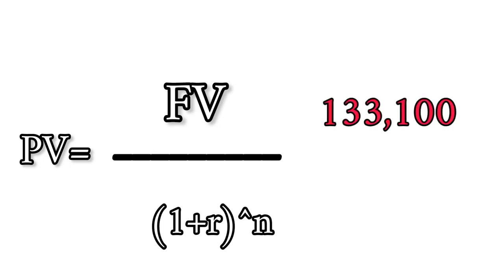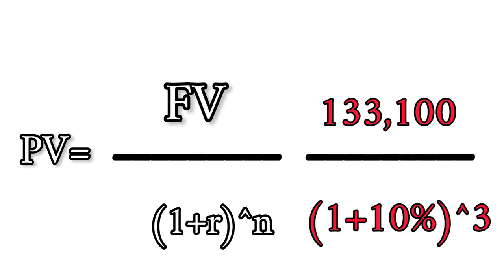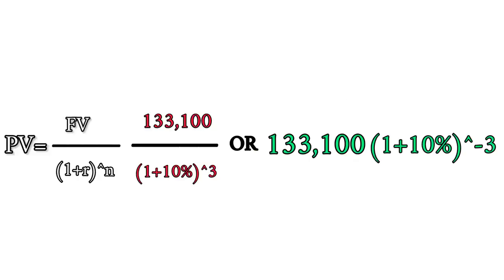So when you are evaluating that investment, your financial manager will help you to discount it. You have 133,100 over one plus 10 percent raised to power three, or you can also write it as 133,100 times one plus r raised to power minus three.